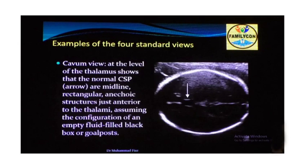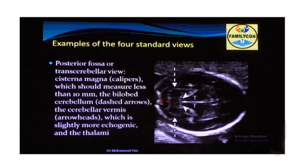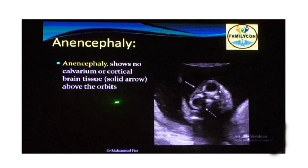The K1 view at the level of the thalamus shows the normal cavum septi pellucidi (CSP) — a midline rectangular structure, just anterior to the thalami, appearing as an empty fluid-filled black box. The fourth view is the posterior fossa or transcerebellar view, where the cisterna magna can be evaluated along with the cerebellum. Normally, the cisterna magna is less than 10 mm.